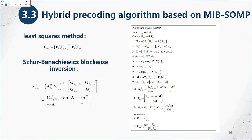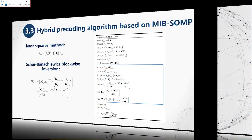Finally, the MIBSOMP algorithm divides a high-dimensional matrix into low-dimensional matrices and uses the result of the previous iteration to perform the inversion operation of the block matrix in the current iteration, which reduces the complexity of the SOMP algorithm.